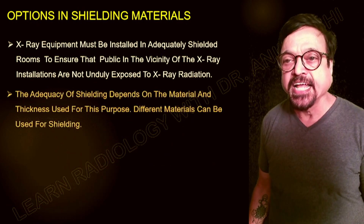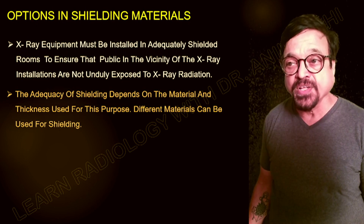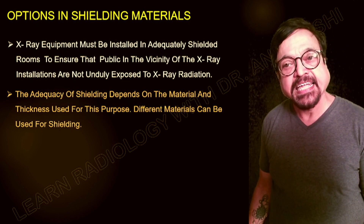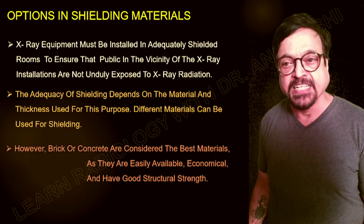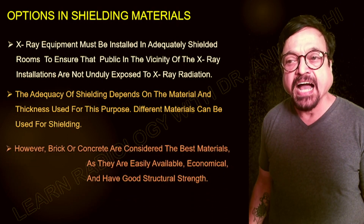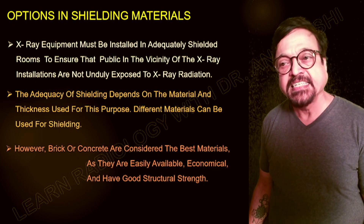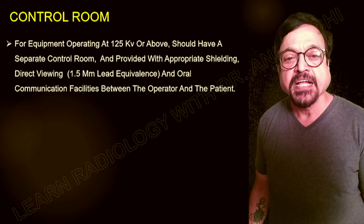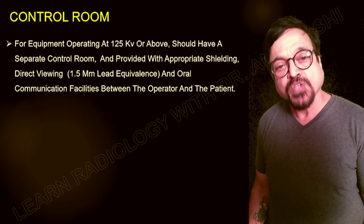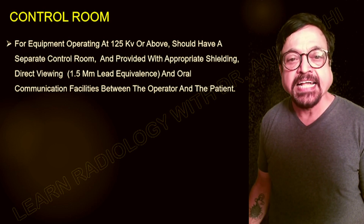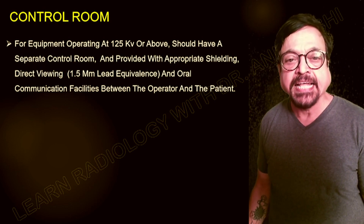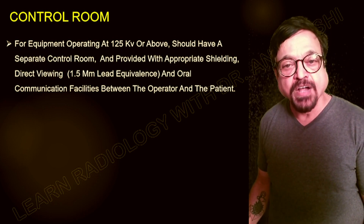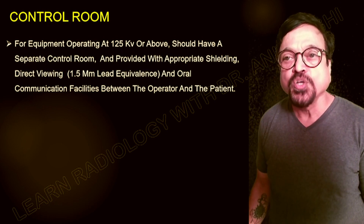The adequacy of shielding depends on the material and thickness used. Different materials can be used depending on convenience; however, brick or concrete are considered the best materials since they are easily available, economical, and have good structural strength. For equipment operating at 125 kV or above, there should be a separate control room. Most diagnostic x-ray units do not go up to 125 kV, but if the unit does, a separate console room is required.